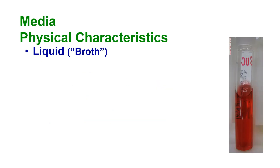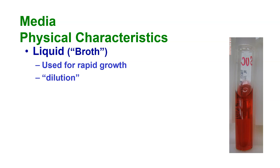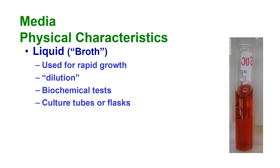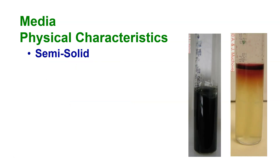When we look at media, one type is broth — it is basically a liquid material. We use it for rapid growth because being liquid allows the organism to incorporate into the entire volume. We often use it for dilution, since we can dilute samples in ways we couldn't on a solid surface. We run biochemical tests on it — this particular one is a phenol red fermentation test. It is used in culture tubes or flasks; we very rarely use it in a petri dish.